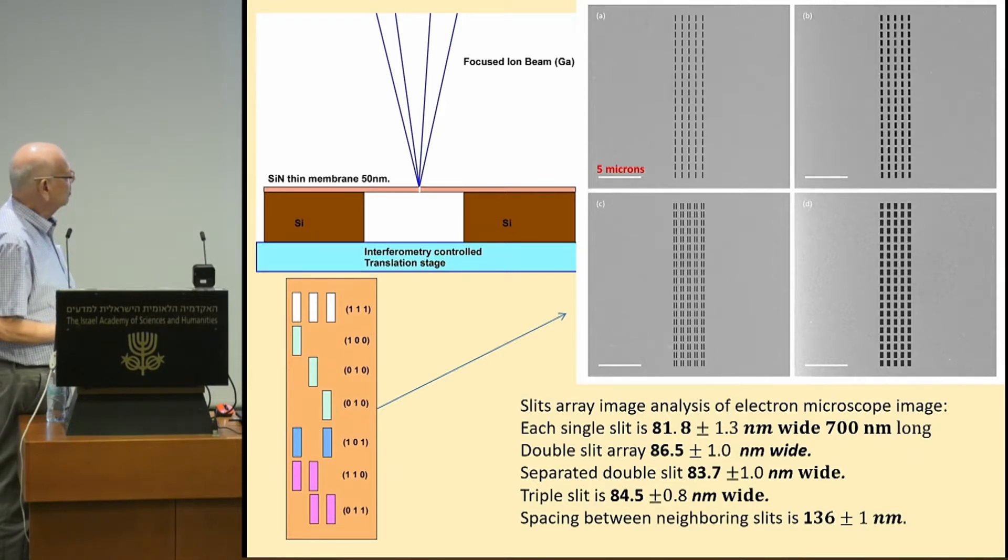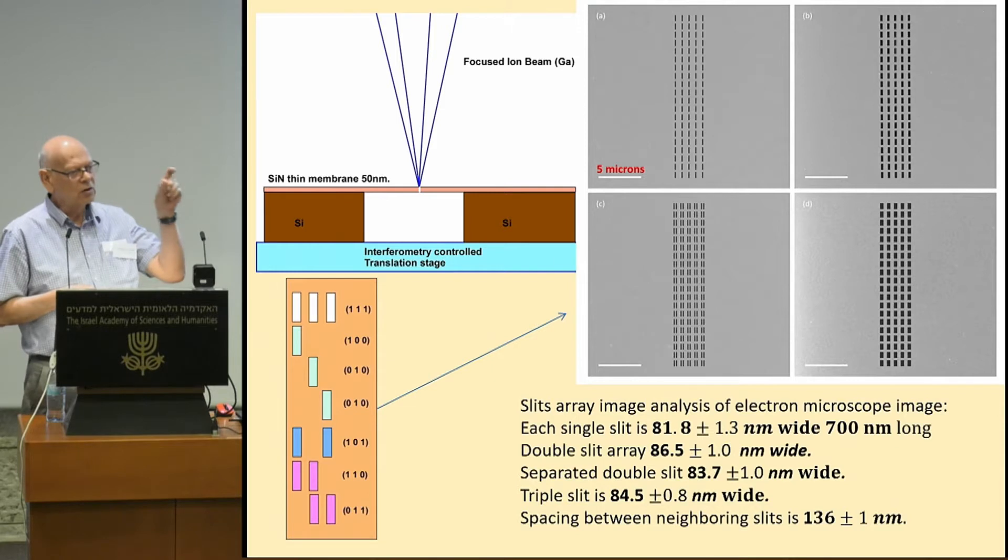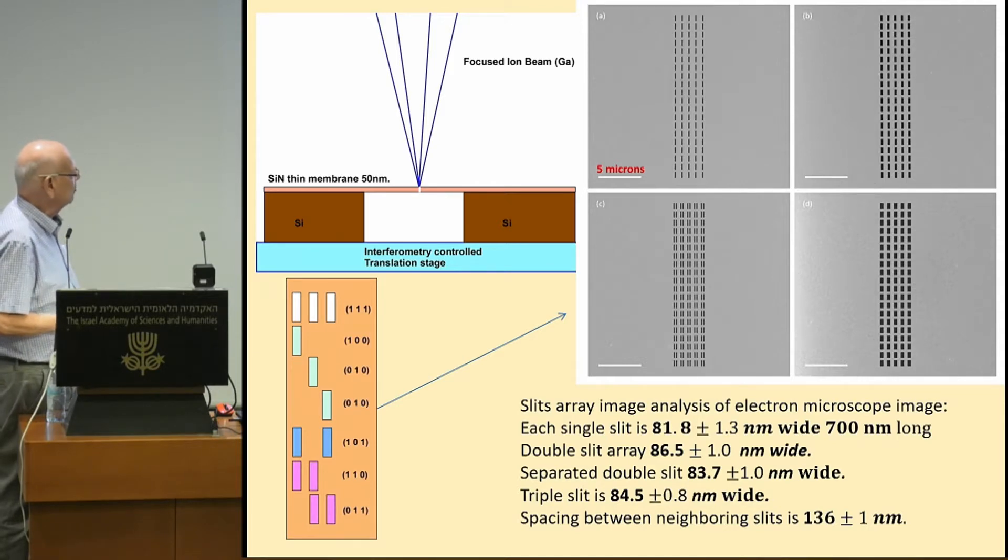And you see, the accuracy with which we can machine a slit is about one nanometer. One nanometer is about five atomic layers. There is not much room for improvement in that. So we machine the slit with the best accuracy we could, which is about one nanometer out of 100 nanometer, roughly.